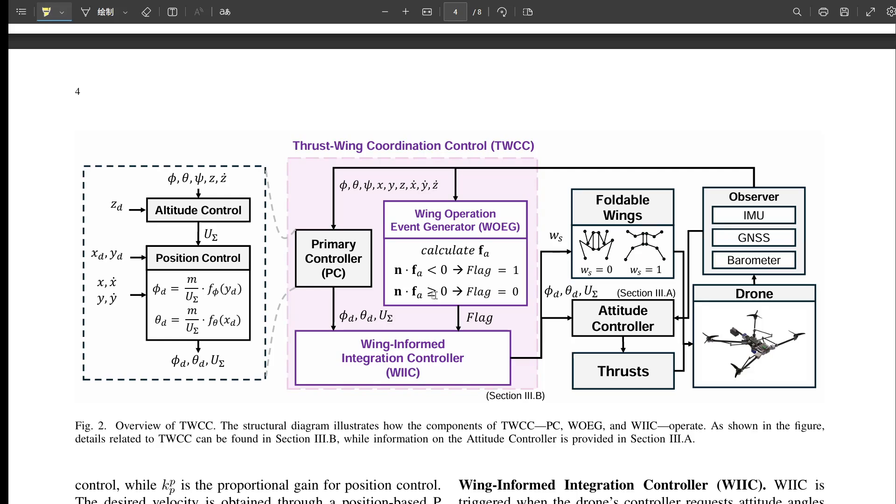Yes, the WIIC steps in when two things happen. One, the PC's demanding an attitude angle that's beyond the physical limit. Two, the WOEG has raised that flag, saying wings would help. Okay, so the WIIC, what does it do differently? Right. It sort of overrides the PC's extreme command. Instead of trying to force that impossible angle, the WIIC basically says, okay, hold the angle at the maximum possible limit. And now let's regulate the propeller thrust and deploy the wings.